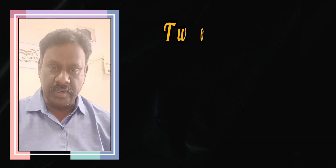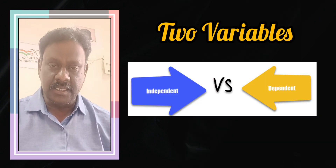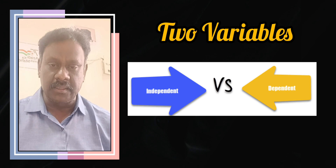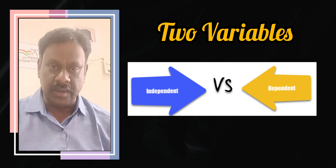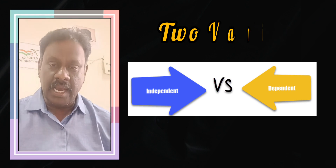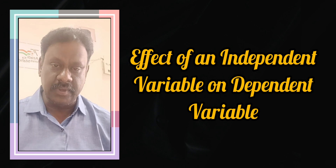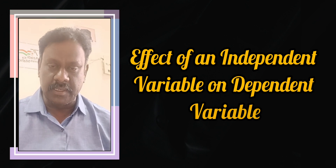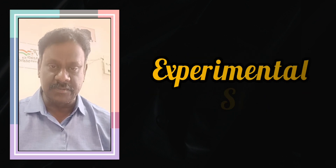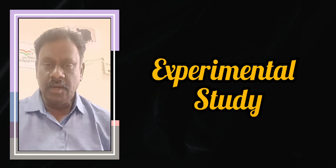So in an experimental study, there are two variables: one is the independent variable, and another one is the dependent variable. We are here to see the effect of an independent variable on the dependent variable — that is an experimental study.